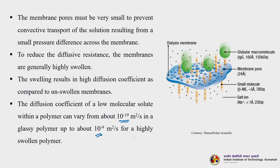This schematic representation shows globular proteins — large in size — being retained on the membrane surface, while small molecules of about 5 angstroms, 78 daltons, and 23 daltons (salt ions and small molecules) permeate through to the downstream or permeate side.